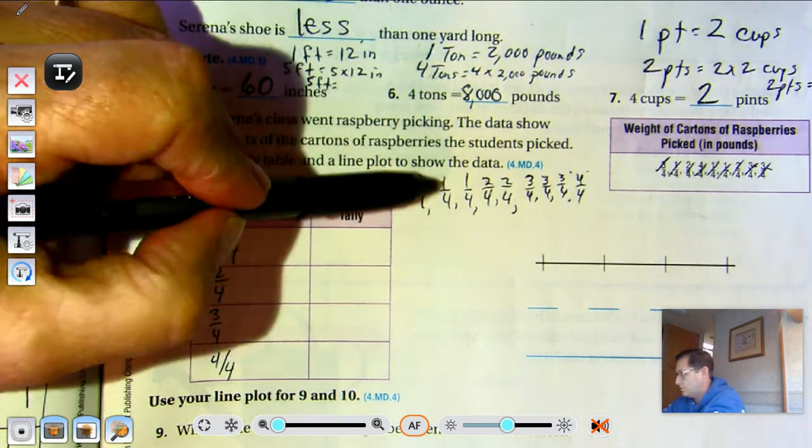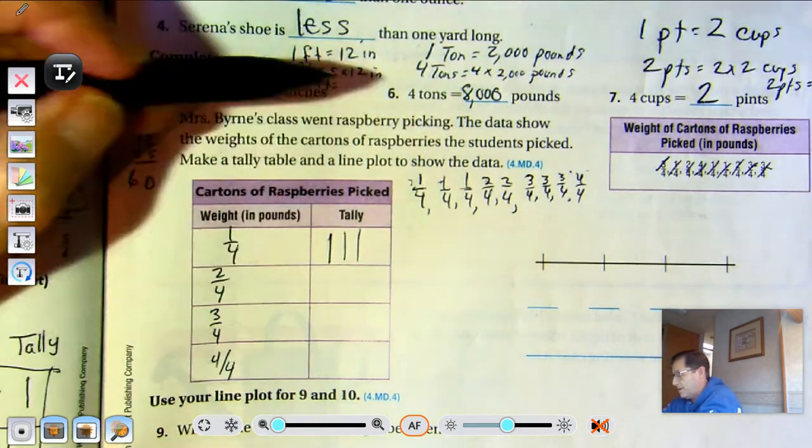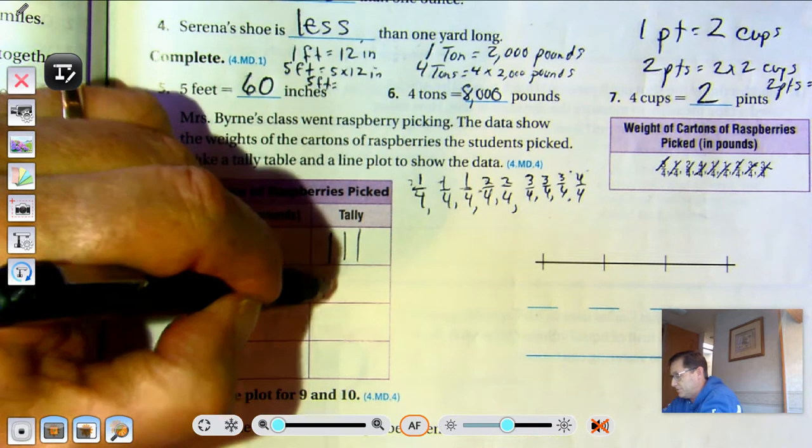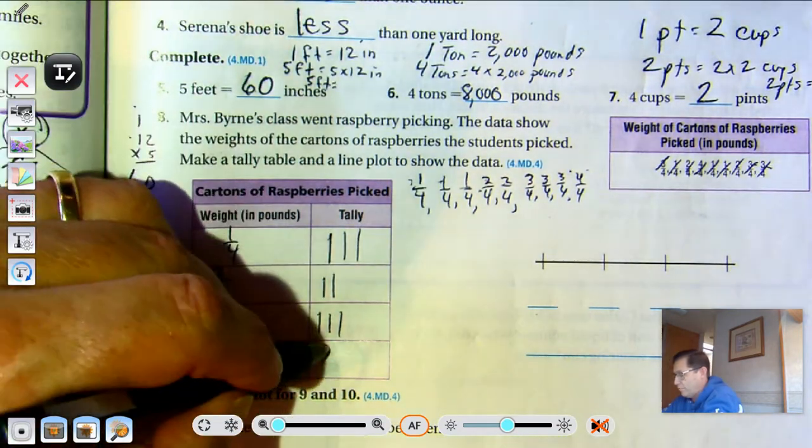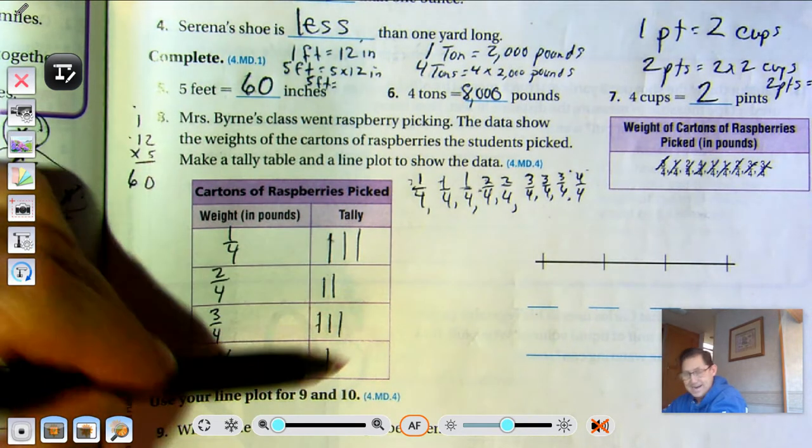Now put the numbers for fractions in our tally chart. One fourth, two fourths, three fourths, four fourths. How many one fourths? One, two, three. How many two fourths? Two. Three fourths? Three. Four fourths? One.